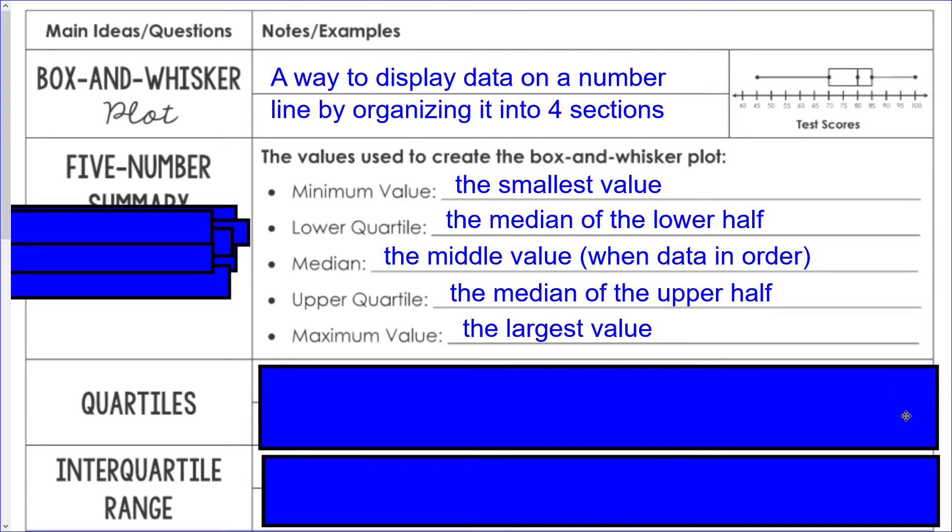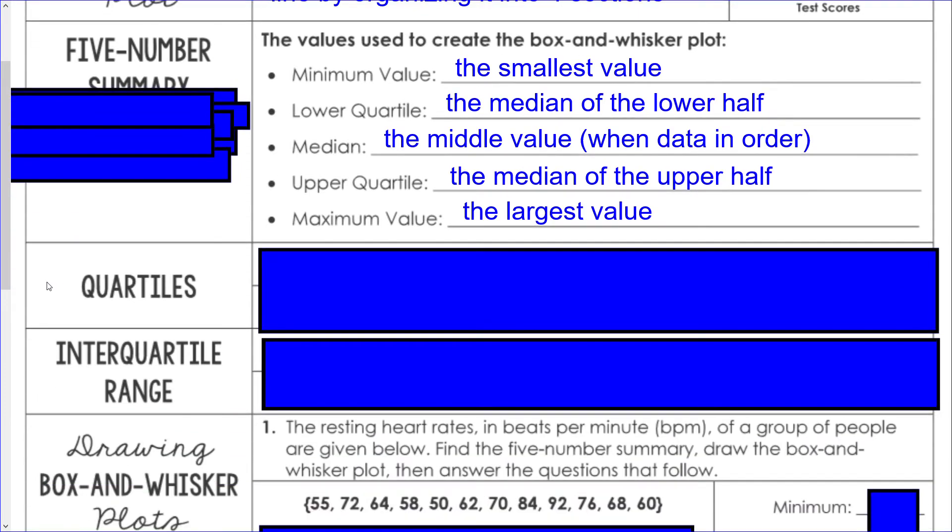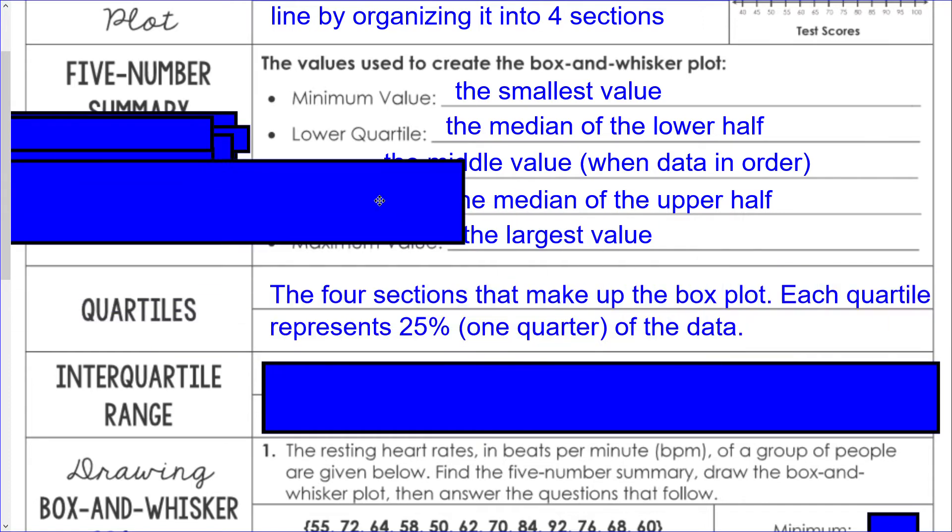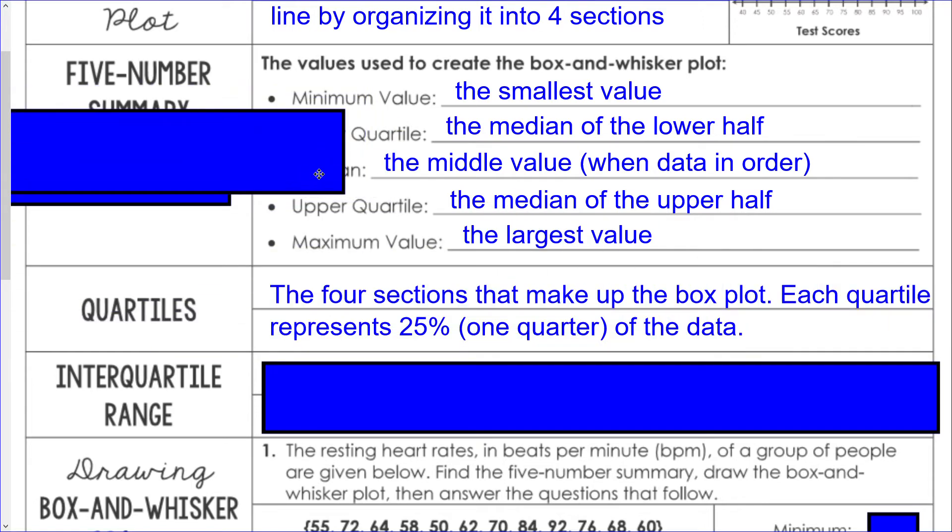The word quartile sounds a lot like the word quarter, and that's on purpose. Quartiles are the four sections that make up the box plot, and each quartile represents 25 percent or one quarter of the data.